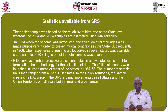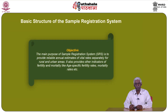The full scale survey was launched in urban areas of most of the states in 1967 to 68. The number of sample units then ranged from 40 to 100 in states. In union territories, the sample size is small. At present, the SRS is being implemented in all the states and union territories on a full scale, both in rural and urban areas.